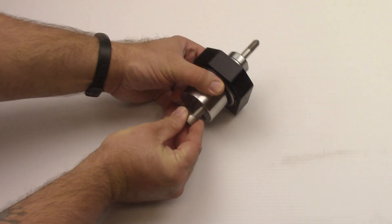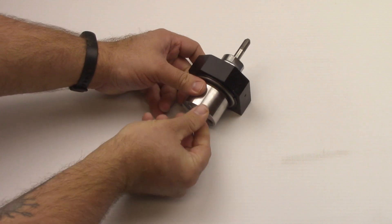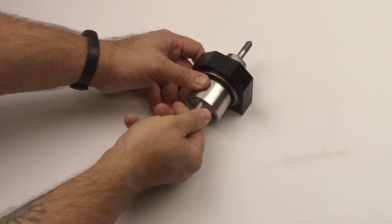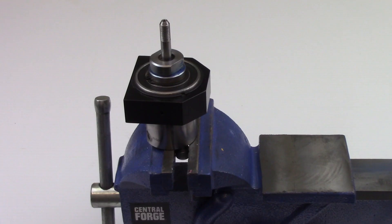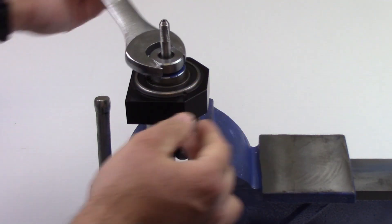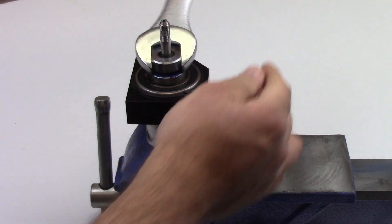Thread two three-eighth 24 bolts into the bottom of the swivel body. Secure the body by clamping the bolts in a bench vise. To disassemble the swivel, unscrew the swivel cap.